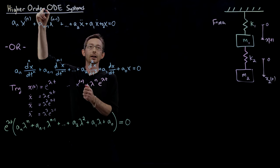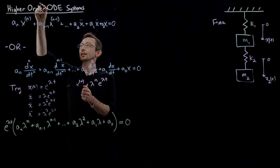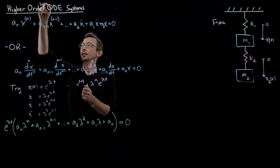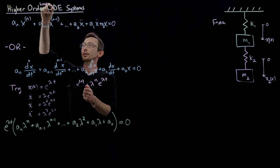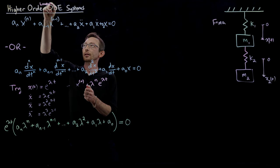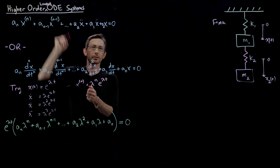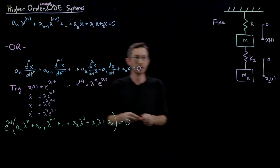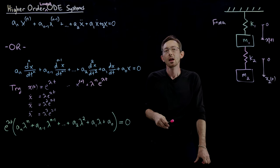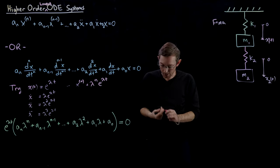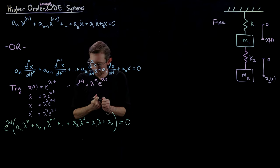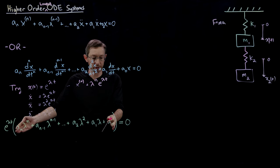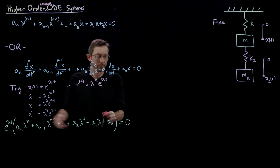I should really be writing that this is linear — these are linear ODE systems. So this is our characteristic polynomial, essentially, just like before.